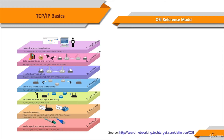OSI was officially adopted as the international standard by the International Organization of Standards, ISO. The main concept of OSI is that the process of communication between two endpoints in a telecommunication network can be divided into seven distinct groups of related functions, or layers. Each communicating user or program is at a computer that can provide those seven layers of function. In a given message between users, there will be a flow of data down through the layers in the source computer, across the network, and then up through the layers in the receiving computer. The seven layers of function are provided by a combination of applications, operating systems, network card device drivers, and networking hardware.